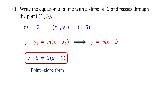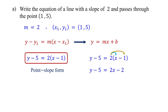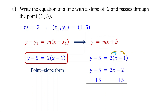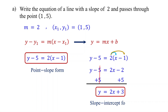To write the equation in slope-intercept form, you can convert this. Start by distributing the 2: 2 times x is 2x, and 2 times negative 1 is negative 2. In slope-intercept form, y should be by itself, so isolate y by adding 5 to both sides. On the left, these cancel, leaving y by itself. On the right, negative 2 plus 5 is 3. The equation is now in slope-intercept form.